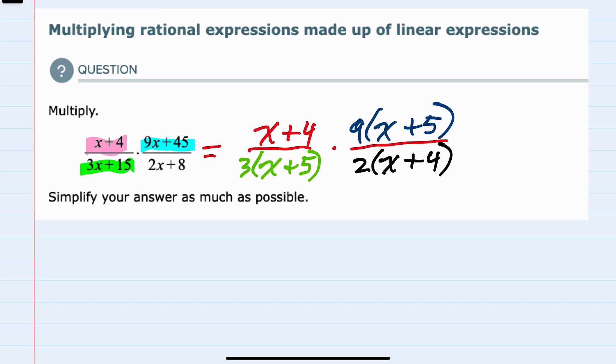And now that I have this fully factored, I can look to see if any of the terms in the top will cancel with terms in the bottom. And here we're going to see that happen in a couple of places. First with the x plus 4's. There is an x plus 4 term in the top and an x plus 4 term in the bottom. Those will cancel.